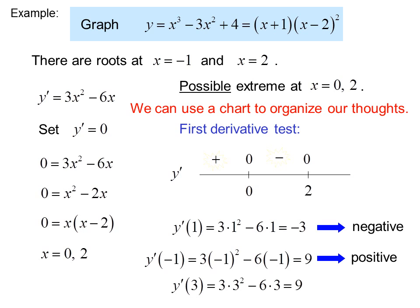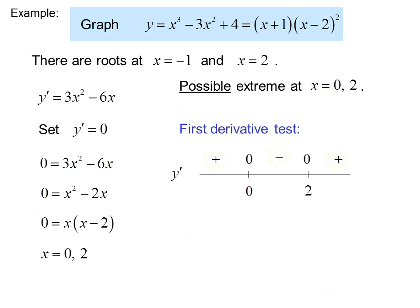Plugging in x equals 3 — a point to the right of the second critical point — y prime of 3 is 9, which is also positive, so the slope is increasing. Therefore there is a maximum at x equals 0, since the function increased to 0 and then went back down, and a minimum at x equals 2, because the graph went down, leveled off, and then back up.